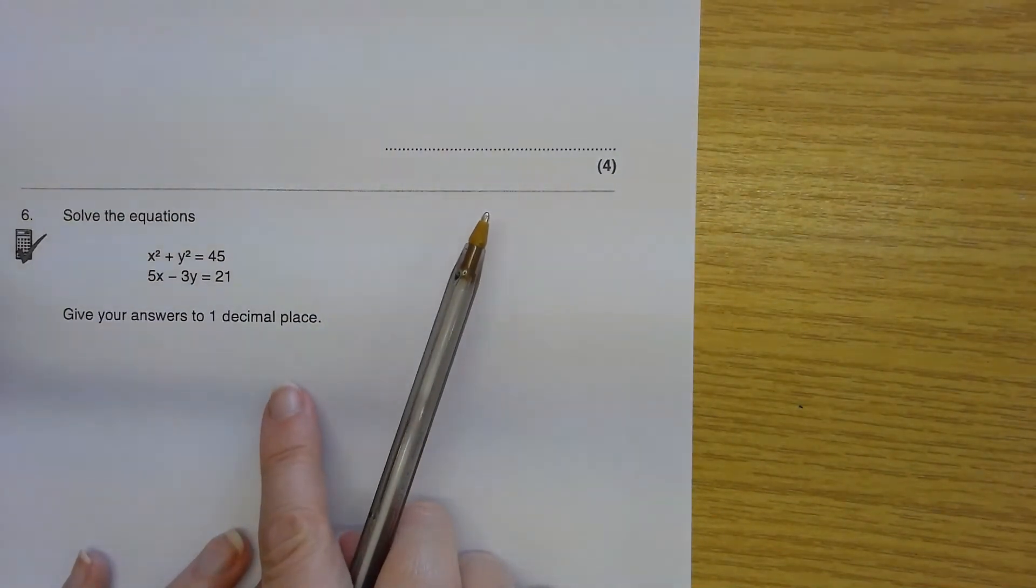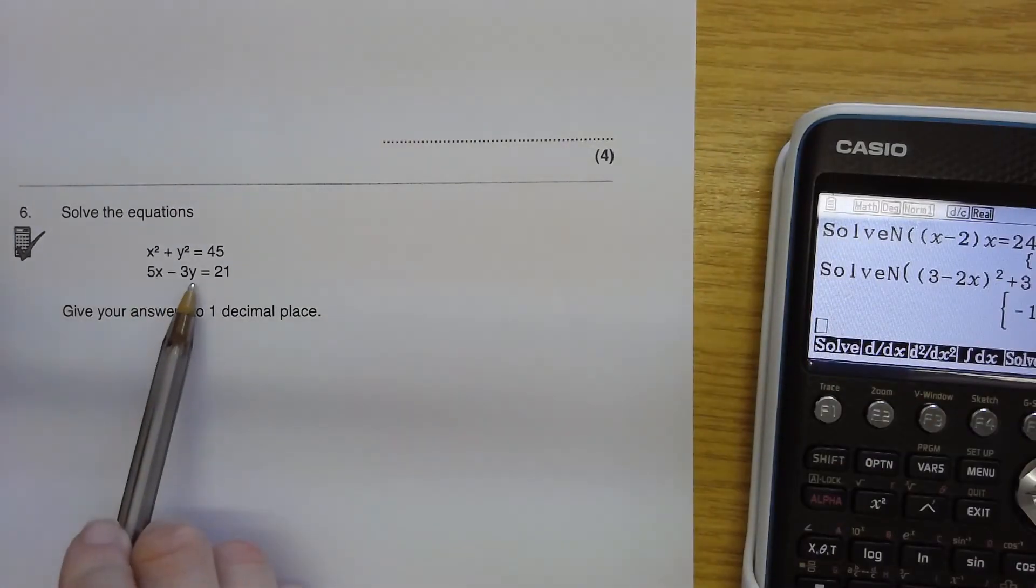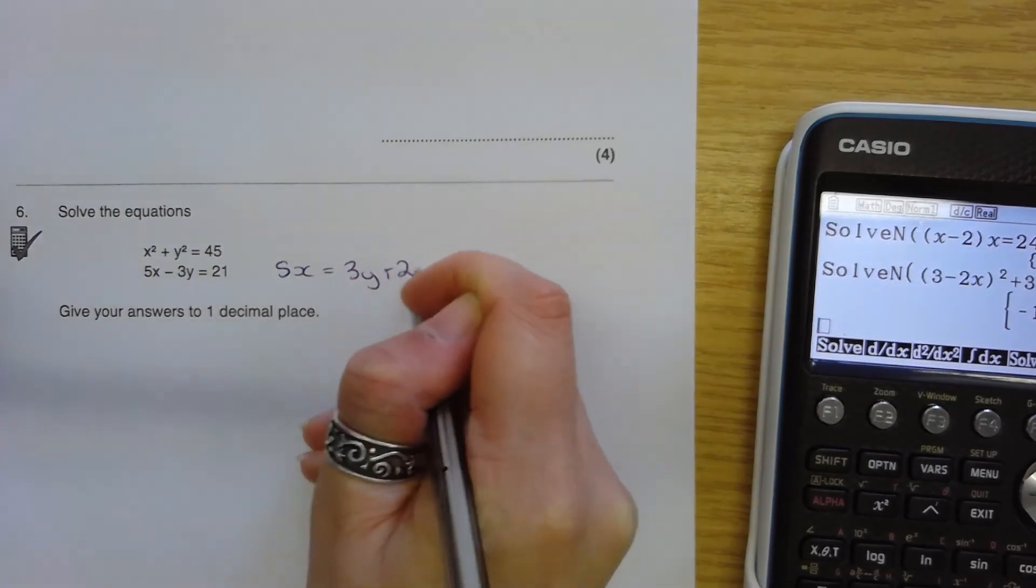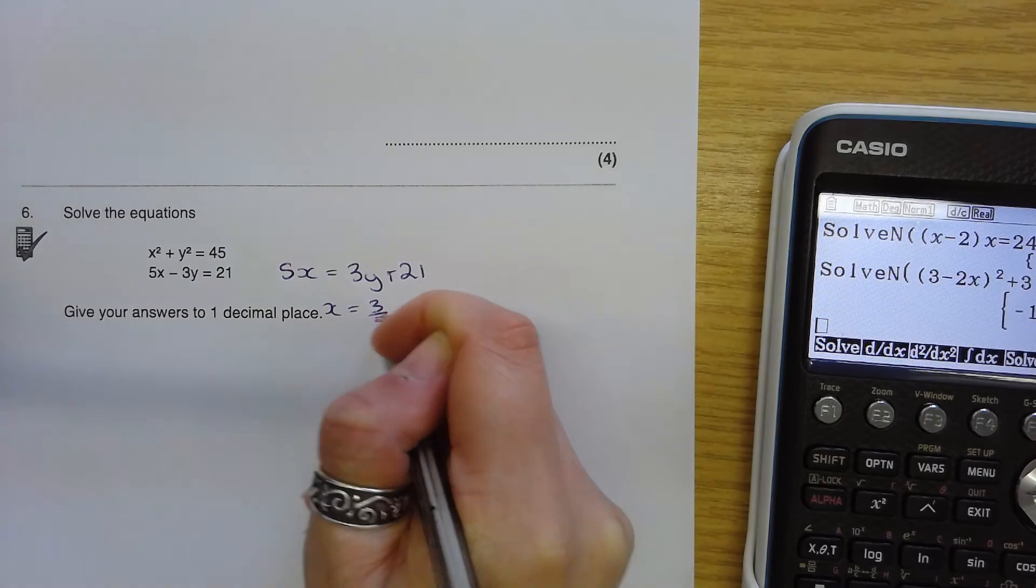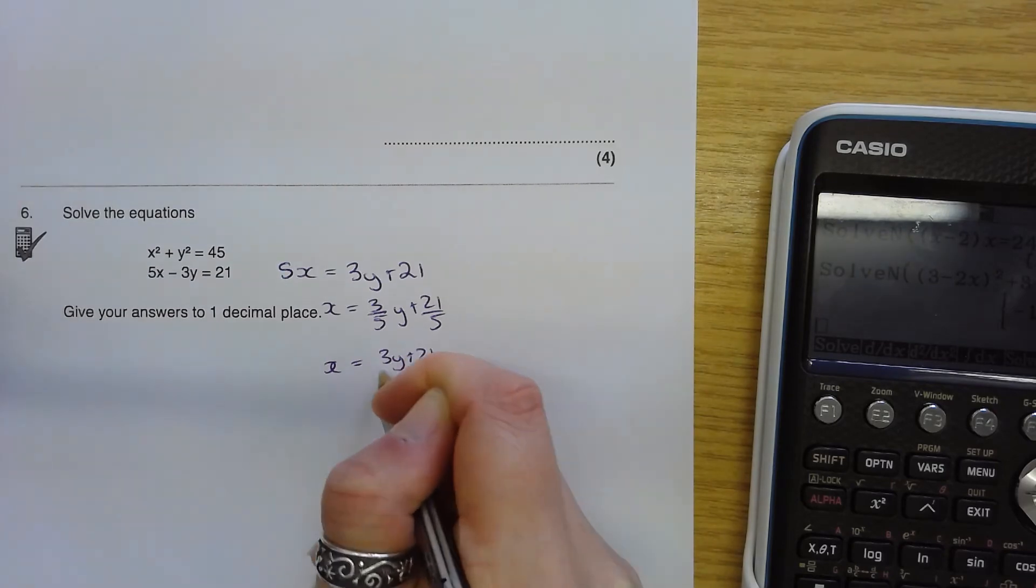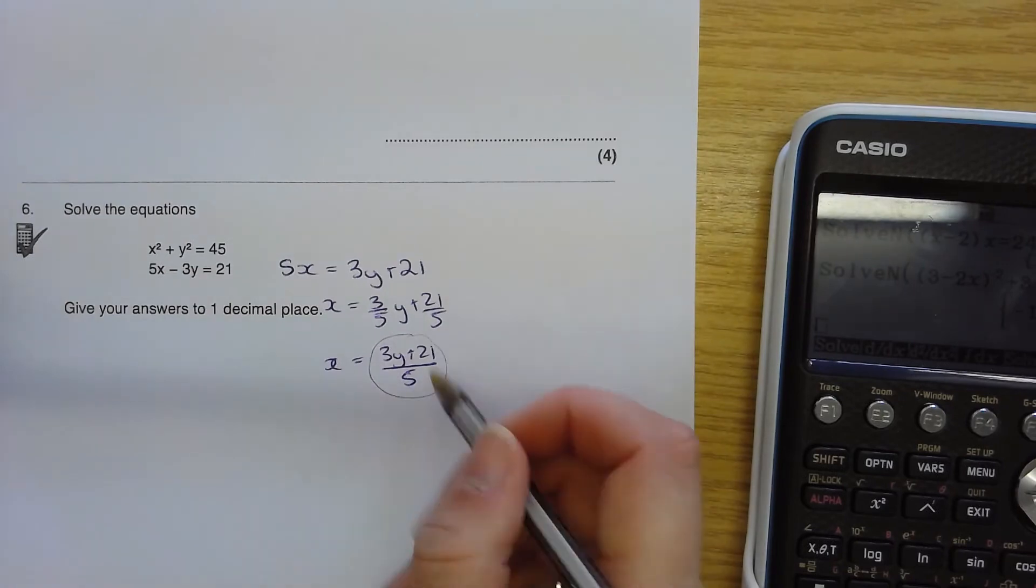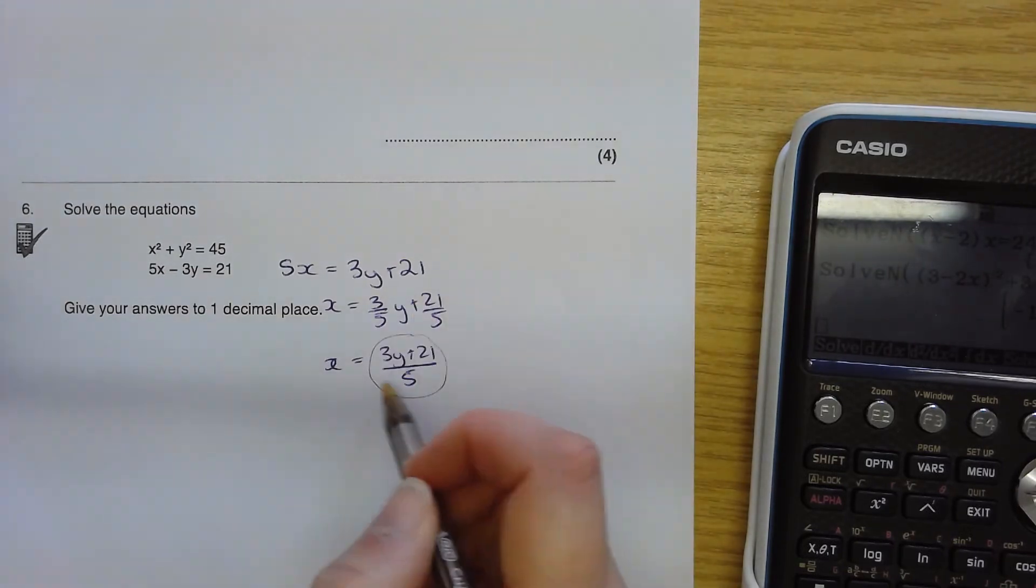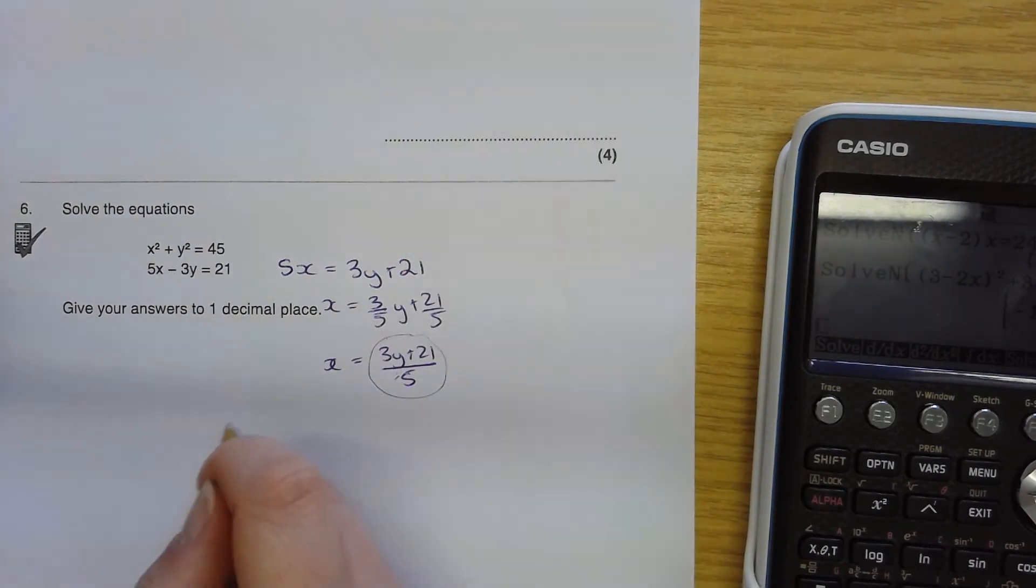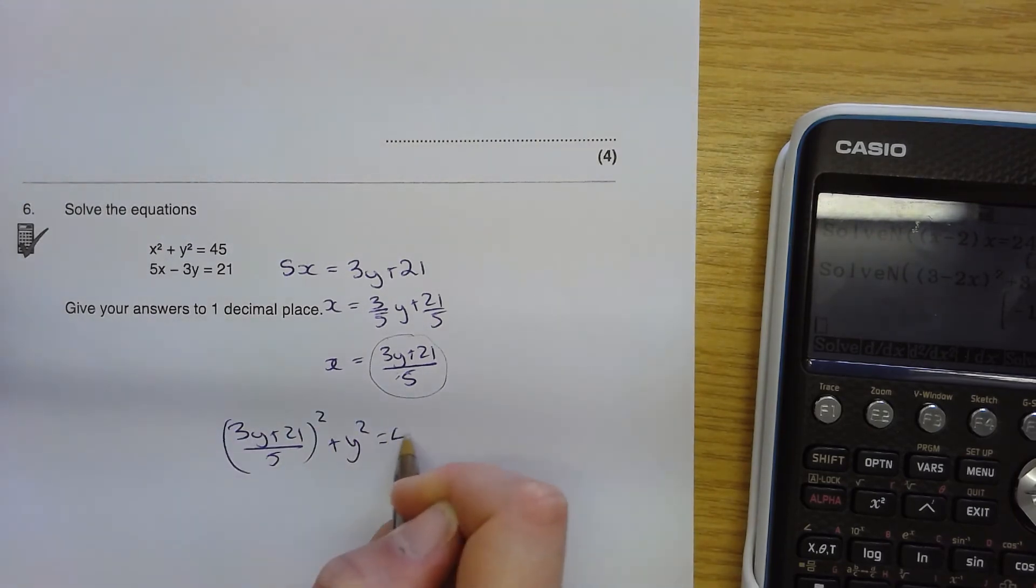And underneath here it says give my answers to one decimal place. So let's look at what that might look like on the calculator. 5x subtract 3y equals 21. So I'm going to say that 5x is 3y plus 21, x is 3y plus 21 over 5. It's probably easier with a calculator to substitute it in in that form when you're typing it out rather than moving between using the cursor between all the different fractions. Substituting that back in here: (3y + 21)/5 squared plus y² equals 45.